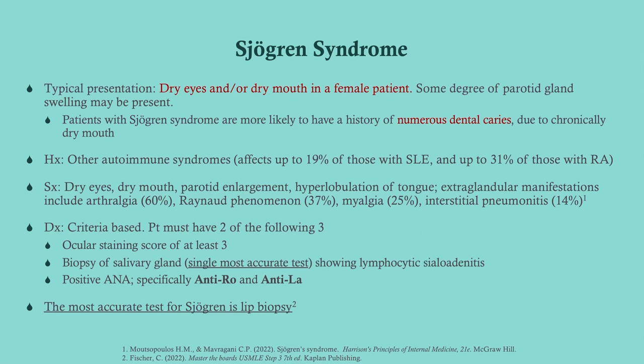Beyond the glandular symptoms, patients can have extra-glandular manifestations such as arthralgias, Raynaud's phenomenon, and myalgias. In that case we may be thinking about lupus or RA, so we'll need to consider that as part of the workup if they don't already have a diagnosis.